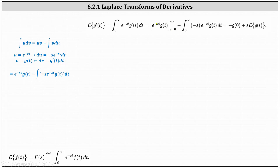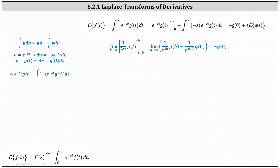To evaluate the first part, we write this using a limit notation, where we replace infinity with h. This gives us, just for the first part, the limit as h approaches infinity. Notice for the anti-derivative, I did write e to the power of negative st as one over e to the power of positive st, and then we have times g of t — it should be easier to find the limit in this form. The interval of integration is from t equals zero to h. Next, we find big F of h minus big F of zero, and then determine the limit as h approaches infinity. As h approaches infinity, this first product goes to zero, giving us zero minus one times g of zero, or just negative g of zero.